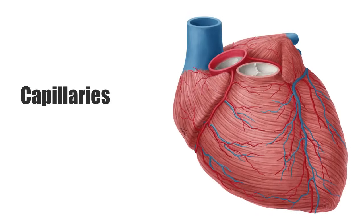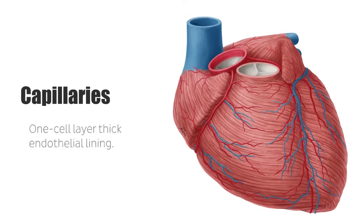Lastly, the capillaries, which are found in the muscles and the lungs, are microscopic and have a one-cell layer-thick endothelial lining. In other words, the walls of the capillaries have the width of one single epithelial cell. They can only tolerate blood under very low pressure due to the fact that it will move slower and gas exchange has a chance to take place.